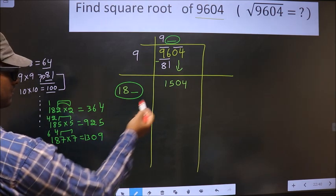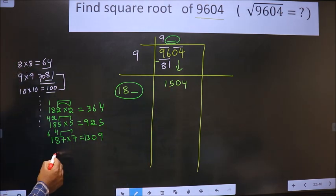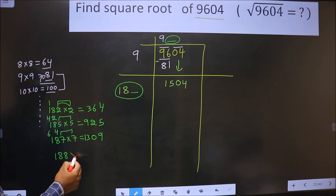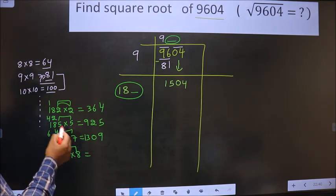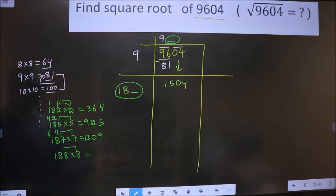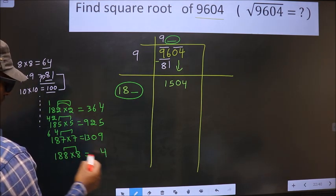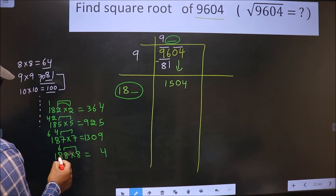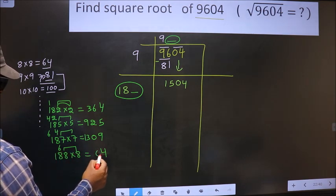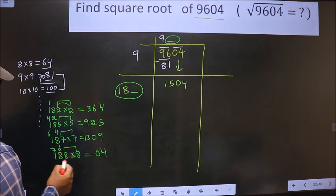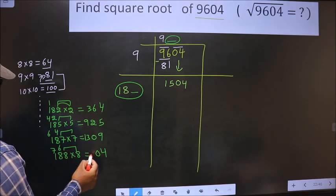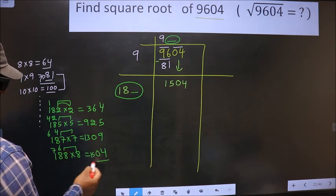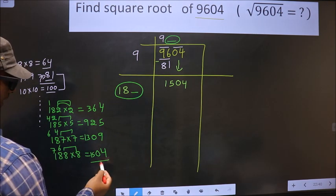Still far from here. If we take 8—observing, these two numbers have to be the same—so 8 into 8 = 64, 8 times 8 = 64, plus 6 is 70, so 0, 7 carried, 8 once 8, plus 7 is 15. We got exactly 1504.